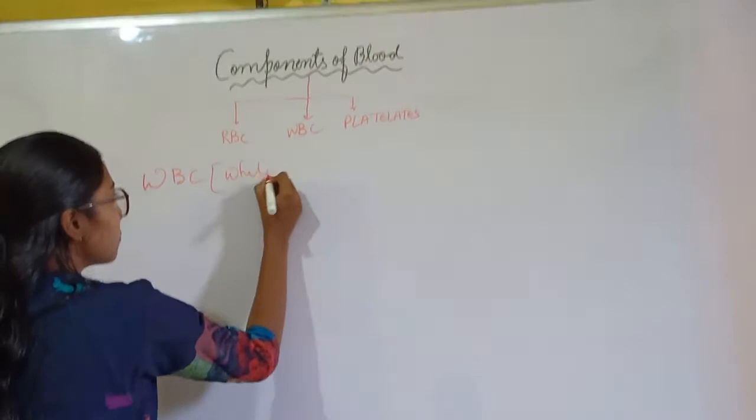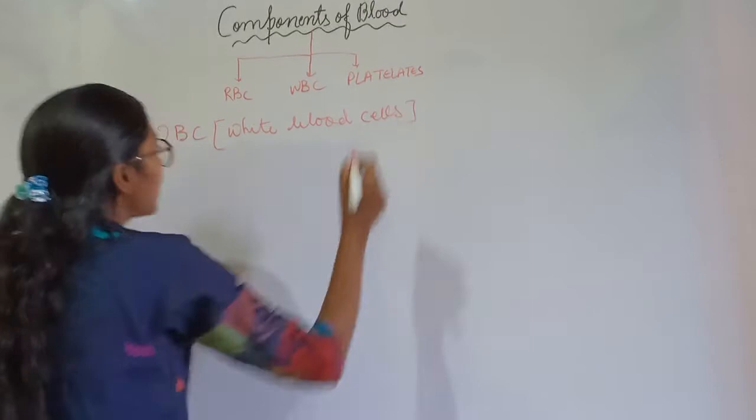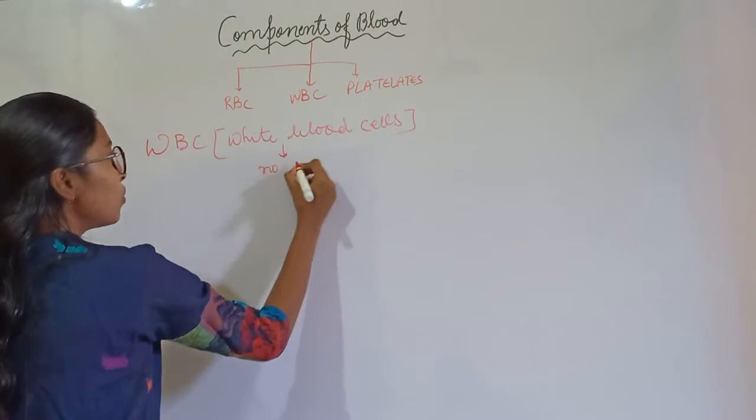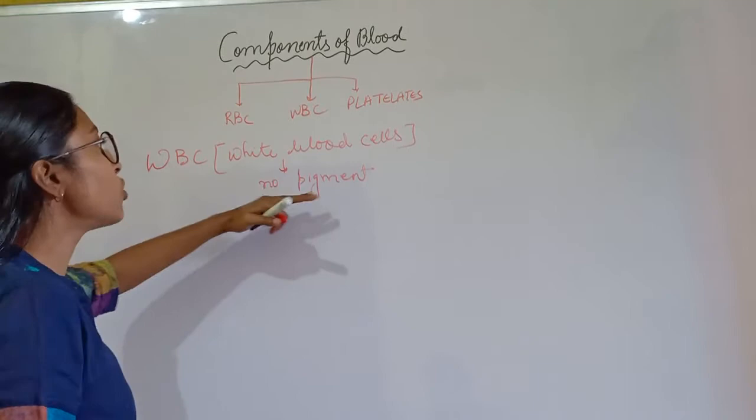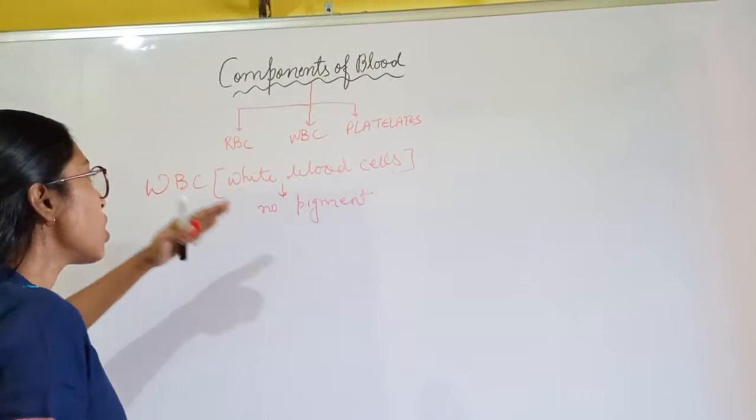WBCs stand for white blood cells. WBCs are known as white blood cells because they contain no pigment. If we compare WBCs with RBCs, RBCs contain the pigment known as hemoglobin. WBCs have no pigment, that's why there is no color in white blood cells.